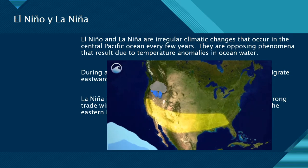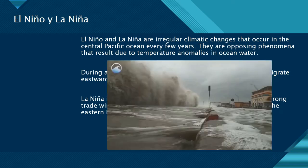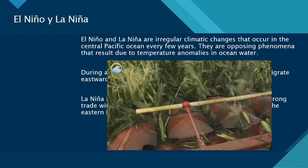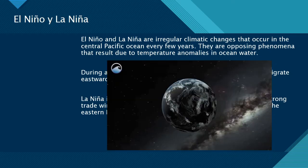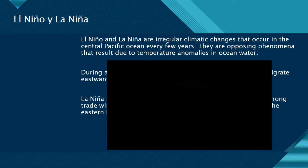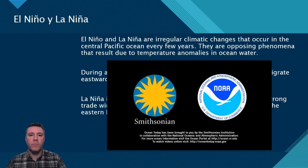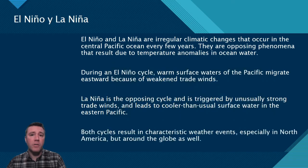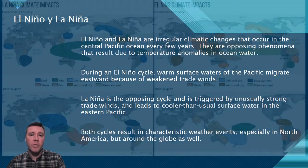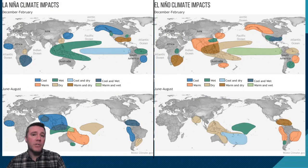El Niño and La Niña together are part of a cycle that influences extreme weather and can impact food production, water supply, and even human health, not just in the U.S. but in many parts of the globe. Although these two cycles generally affect the Americas most substantially, their effects are global, influencing both temperature and precipitation in East and Southeast Asia, Australia, and even as far away as Africa.